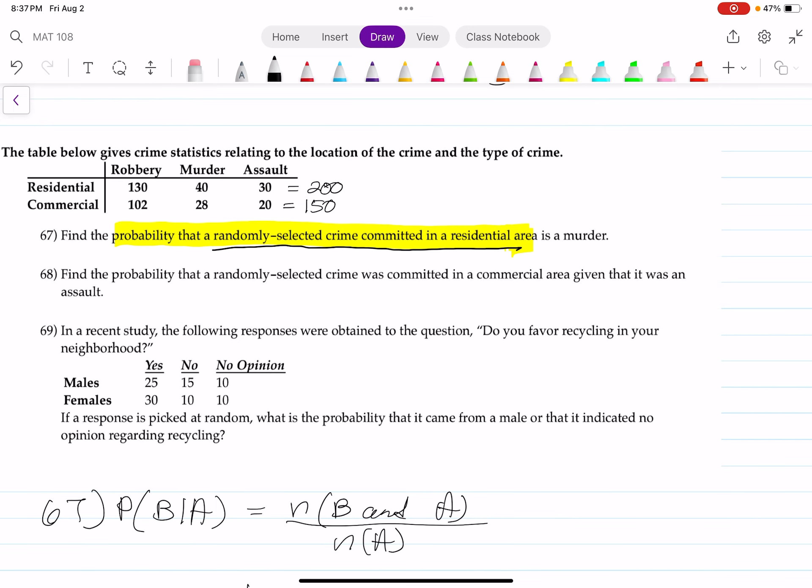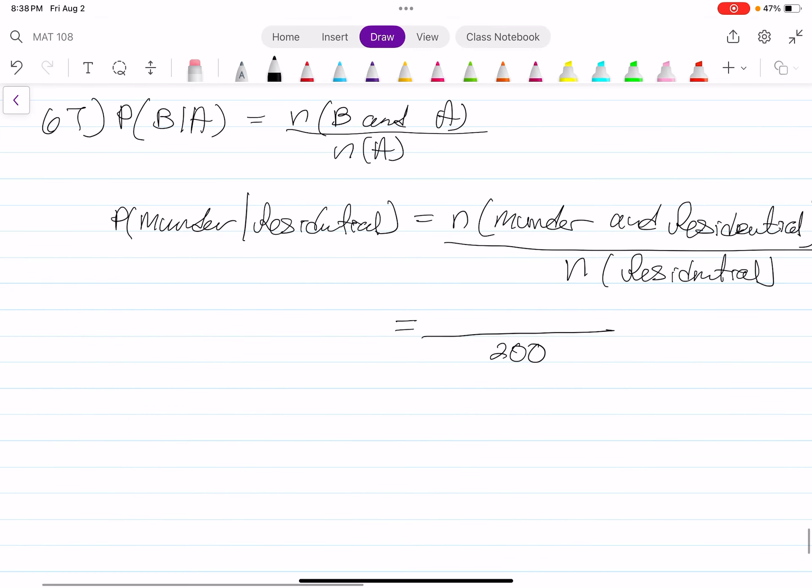Because we're focusing specifically on residential. And out of the crimes committed in a residential area, we have 40 of those crimes being murders. So that's going to be 40 out of 200, which when you divide, that gives you one-fifth. A fifth of all crimes in a residential area is murder.